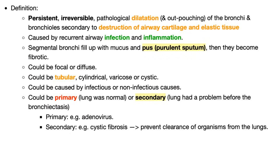Definition of bronchiectasis: persistent, irreversible, pathological dilatation and outpouching of the bronchi and bronchioles, secondary to destruction of airway cartilage and elastic tissue. Why does this happen? Usually inflammation or infection.